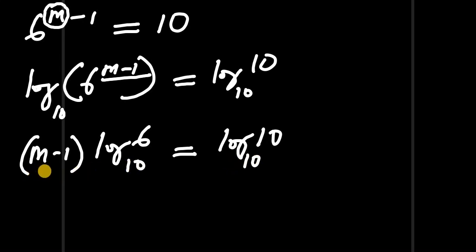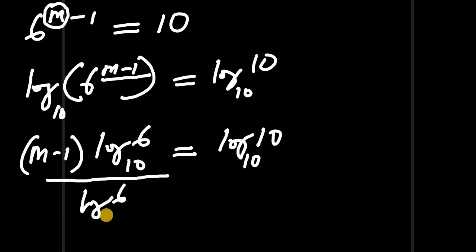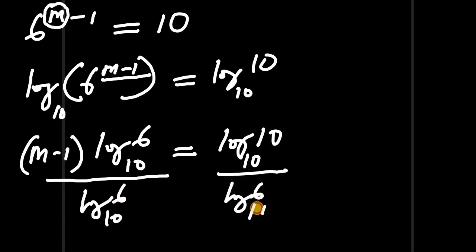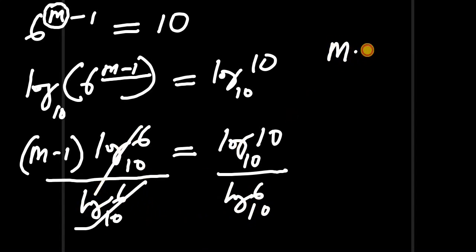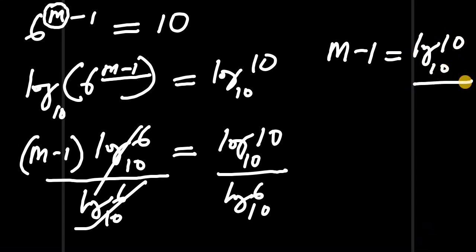Since we are looking for m, let's divide both sides of the equation by log of 6 to the base 10. This cancels the log of 6 on the left, so we get: m minus 1 equals log of 10 to the base 10 divided by log of 6 to the base 10.